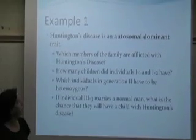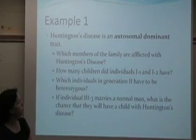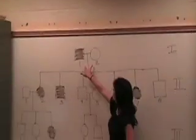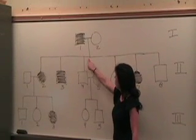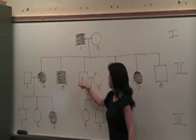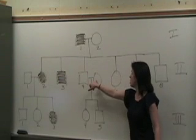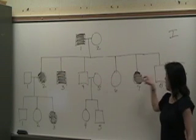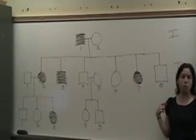The next question. How many children did individuals 1 and 2 in generation 1 have? Here we have individuals 1 and 2 in generation 1. Then we go down and look and see how many people do they have connected to them. 1, 2, 3. This is not one of their kids, this is married to their son. 4, 5, 6. So they have 6 offspring.